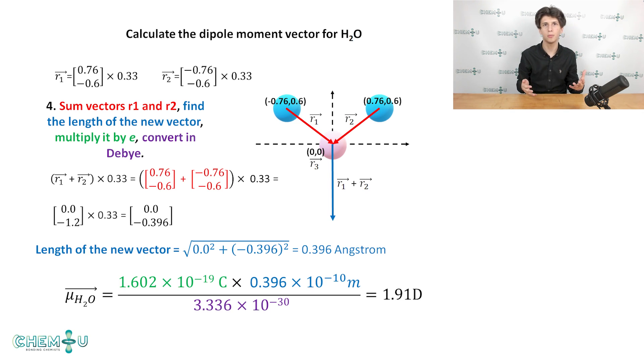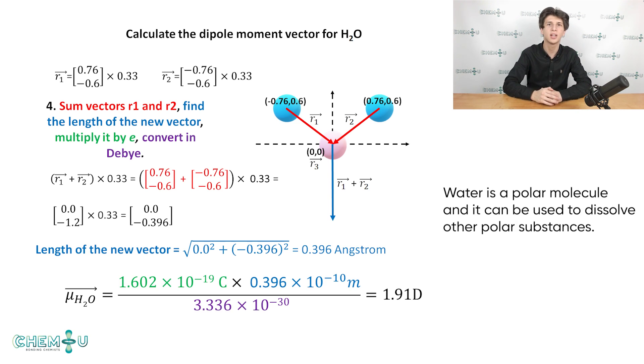Lastly, to calculate the dipole moment of the water molecule, we need to multiply the vector length by charge separation 0.33, then by elementary charge e depicted in green, and then convert the obtained value in Debye as shown in the figure in violet. The calculated dipole moment of water is 1.91 Debye, which is very close to the experimentally determined value of 1.87 Debye. From the answer, we can deduce that water is a polar molecule and it can be used to dissolve other polar substances.